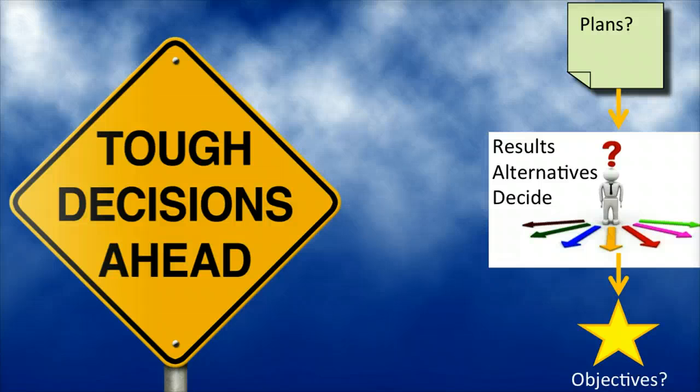The data provided by the accounting information system is an essential source of useful information when deciding between valid alternative courses of action.